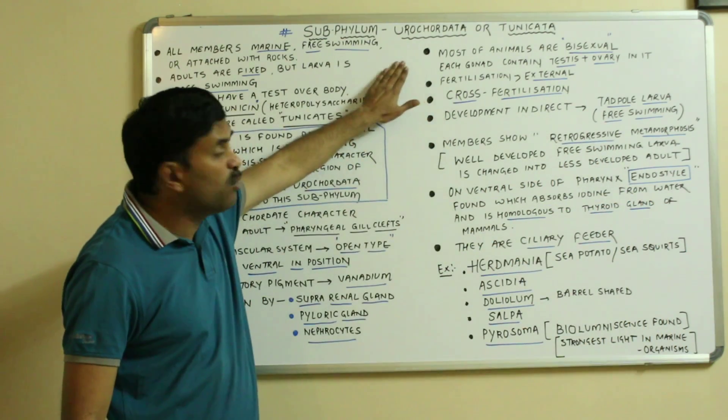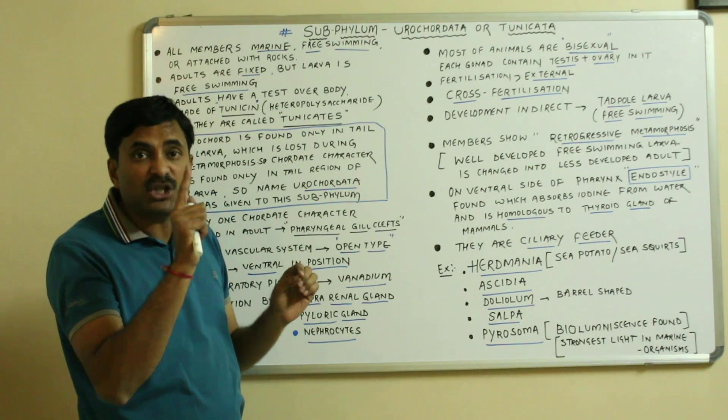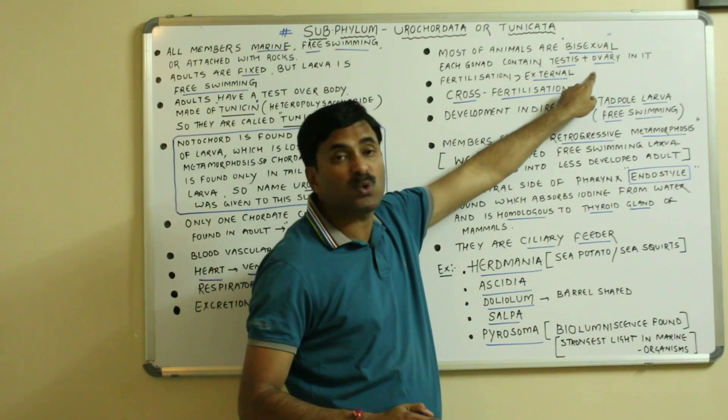Now most of the animals are bisexual and in them each gonad is consisting of testes as well as ovaries in it.